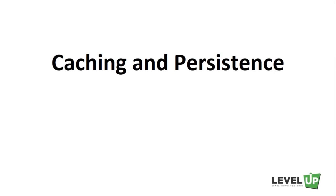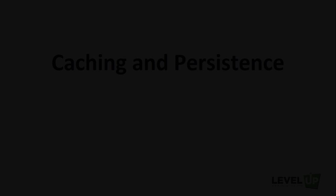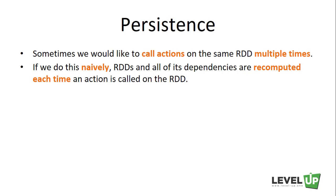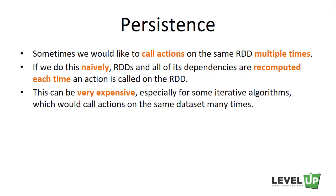Hello and welcome back. We're going to talk about one of the most critical Spark capabilities, which is to save a dataset in memory or disk across operations for performance optimization. Sometimes we would like to call actions on the same RDD multiple times. If we do this naively, RDDs and all of their dependencies are recomputed each time an action is called on the RDD. This can be very expensive, especially for iterative algorithms which call actions on the same dataset many times.